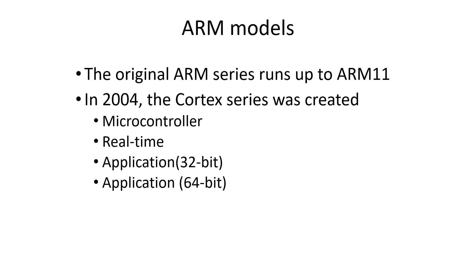The ARM series runs up to ARM 11, with many different versions. In 2004 they split off the Cortex series, which has been very popular, and it has four different models. There's a model for microcontrollers, because the ARM processor occurs in many small embedded machines. There's a real-time version for devices that need real-time response. And then there are two versions for general applications — a 32-bit version and the 64-bit version.